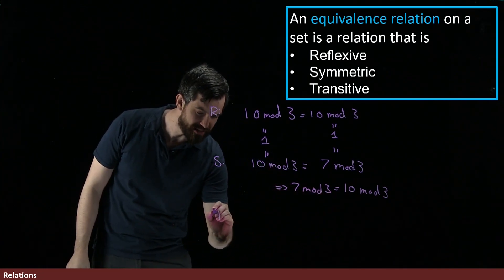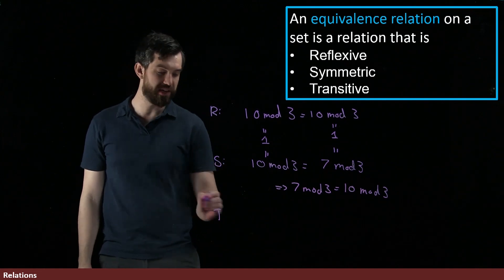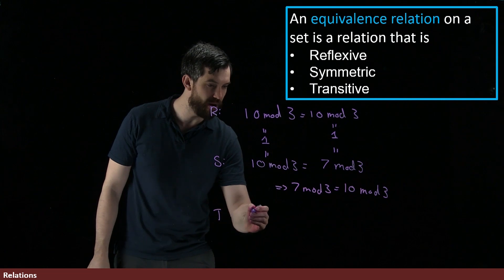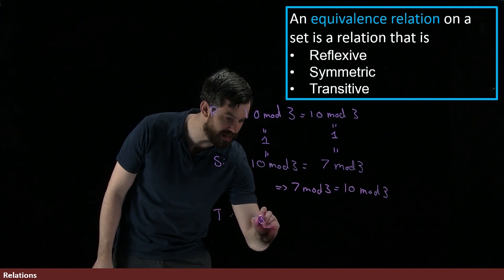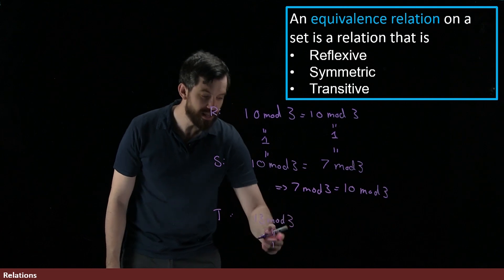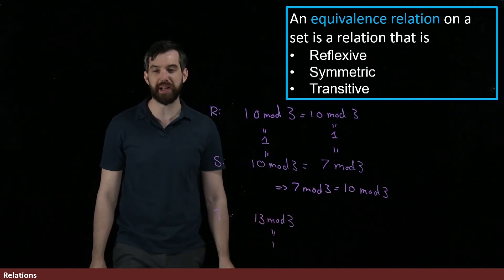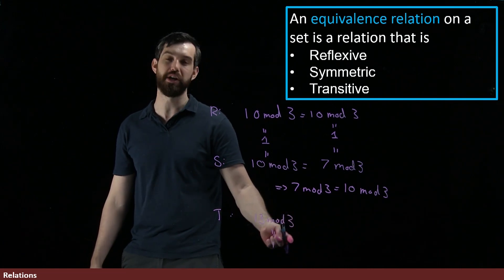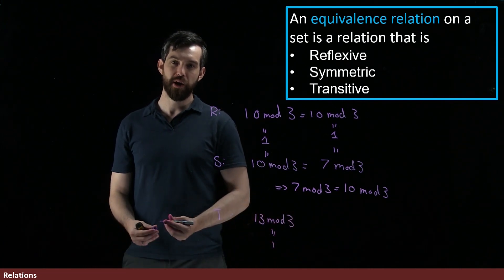And then for transitivity, I'm not going to write the entire thing down, but I'll note that if I choose yet another one, how about 13 mod 3, which is just yet one more example of something which is equal to 1 that has remainder of 1. 13 is going to be 4 times 3 plus a remainder of 1.